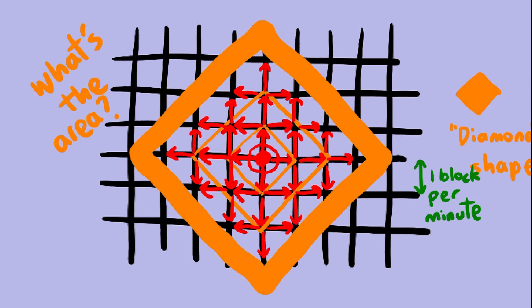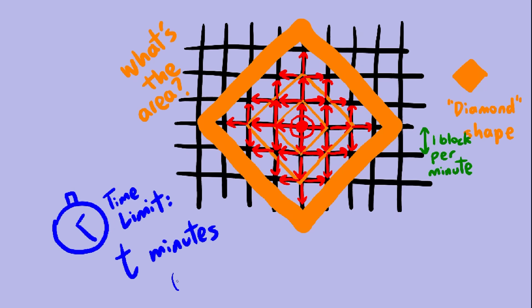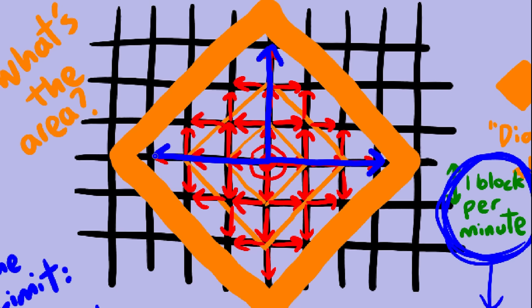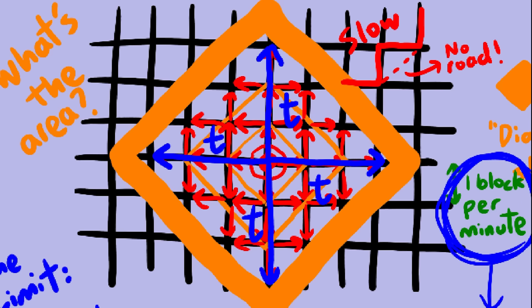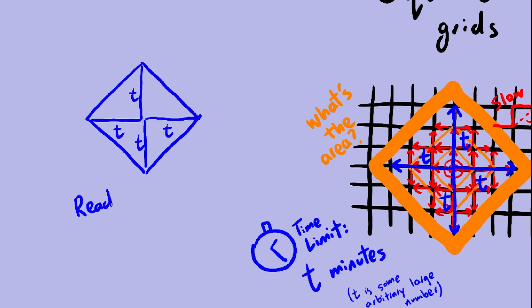How big is the square? Well, if the time limit is t minutes, then you have time to move t blocks. You can move t blocks east, or t blocks north. You can move t blocks in any of the four cardinal directions. However, you can't move t blocks northeast because there's no northeast road. You need to go along the roads, and this slows you down if you're going northeast. Anyway, you can calculate the area of the square to be 2t squared.